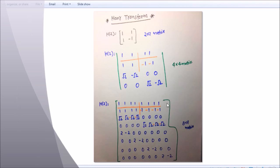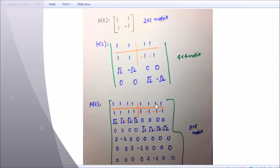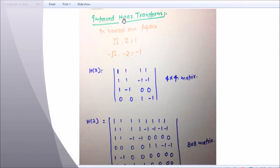This is your improved Haar Transform. In general, at the place of root 2 and 2, put 1. At the place of minus root 2 and minus 2, put minus 1. So here: one, one, one, one; one, one, minus one, minus one; one, minus one, zero, zero.